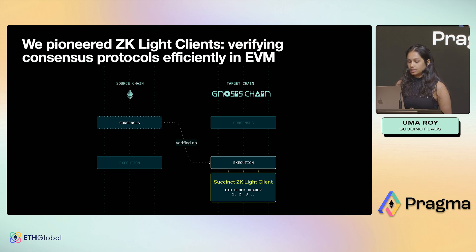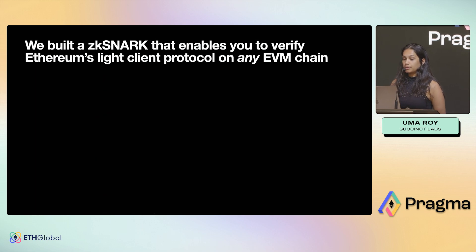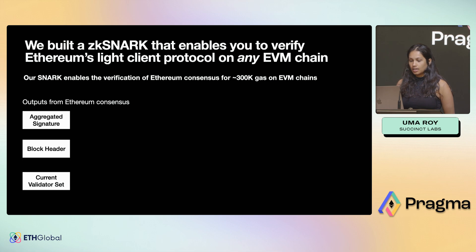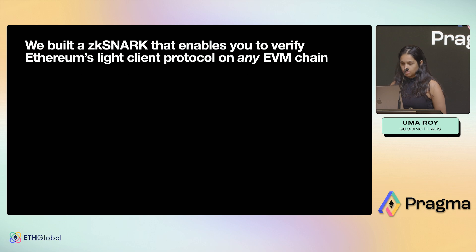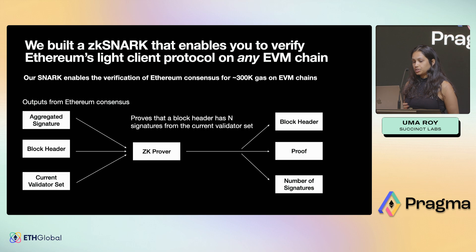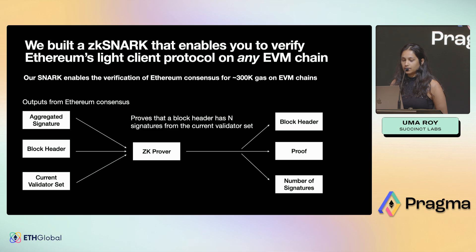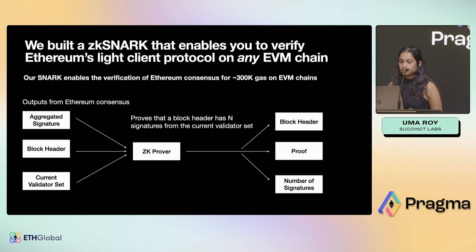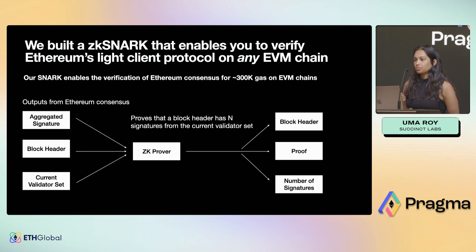We built a ZK light client for Ethereum that lets you verify Ethereum's light client protocol on any EVM chain really efficiently — for around 300k gas. The algorithm takes outputs from Ethereum consensus: validators generating signatures, block headers, and the current validator set. We put those into a ZK prover that proves the current block header has enough signatures from the current validator set. Then we take that block header, the proof, and the number of signatures, and submit them on-chain to run an on-chain light client.